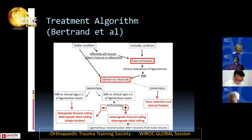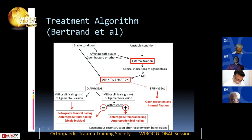A treatment algorithm was given by Bertrand et al. If the patient with a floating knee is in a stable condition and has a closed fracture, you can consider definitive fixation. If it is an open fracture, think about external fixation, or depending on the grade, you can proceed with definitive fixation with primary debridement.